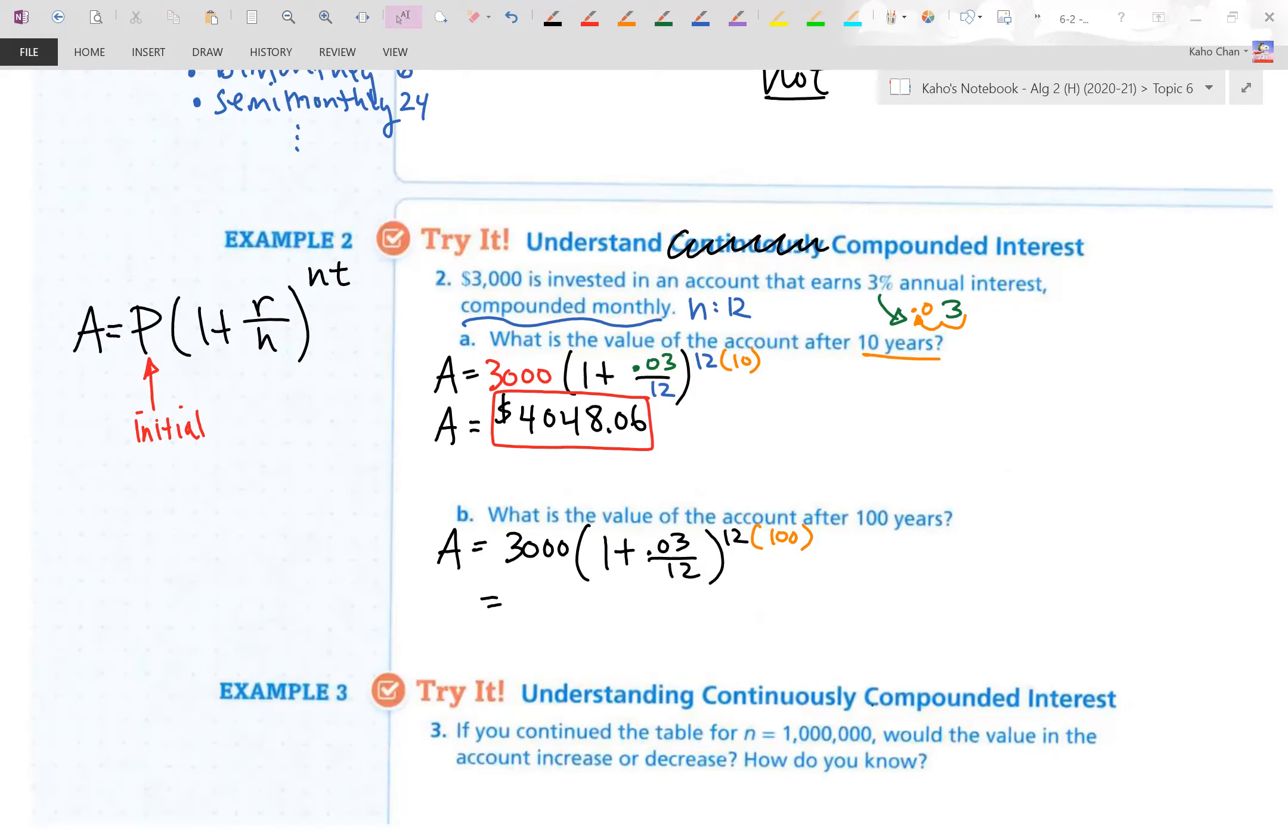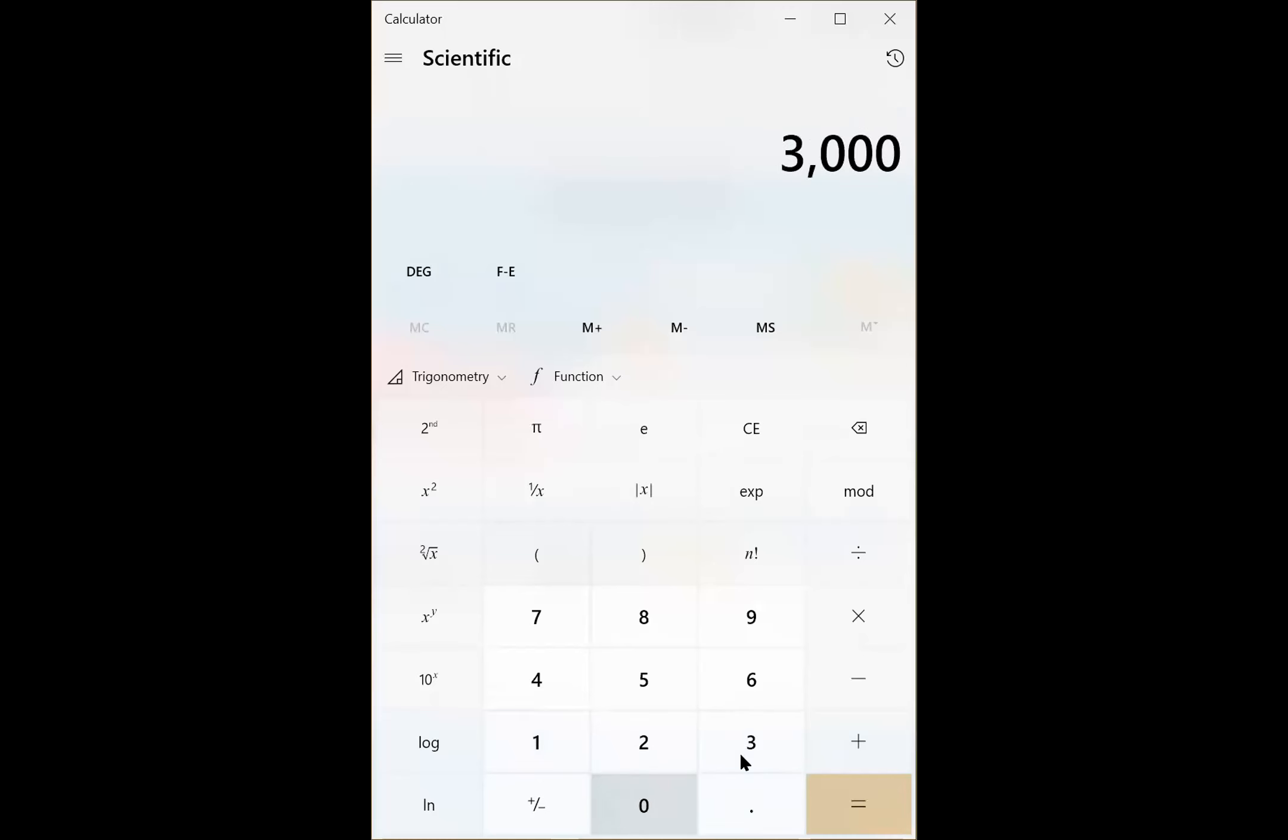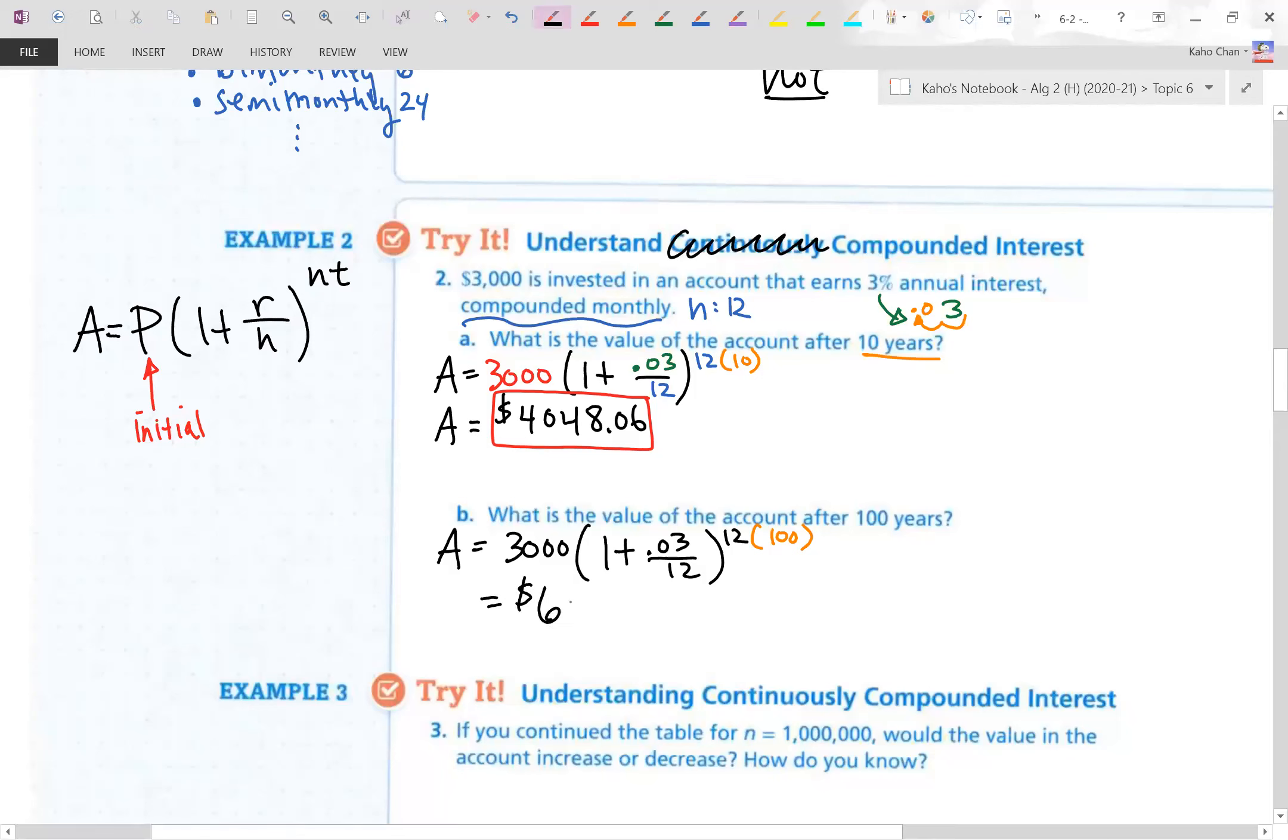$3,000 again, times one plus, in parentheses, 0.03, 3%, divided by 12, close to the power of 12 times 100. That's a lot of years. Whoa, $60,000. That went up pretty nicely. $31.45. Very good. Let's transfer that to here. Our notes. That's a lot of money. $60,031.45, I believe. Very good. Now, you can get silly. I mean, no one really puts money in for 100 years.